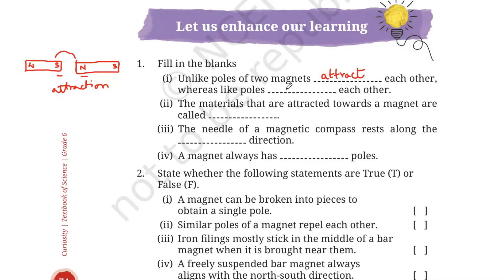Whereas like poles repel each other. In a similar way, if we take two magnets, a magnet always has two poles, and this time I bring two like poles together, suppose South Pole-South Pole or North Pole-North Pole, then in that case the like poles will always show a force of repulsion. Number 2: the materials that are attracted towards a magnet are called magnetic materials. Remember, all the materials that are attracted towards magnets are called magnetic materials. Number 3: the needle of a magnetic compass rests along the North-South direction.